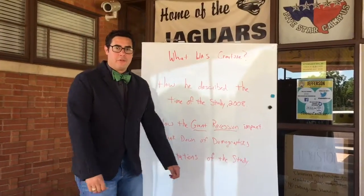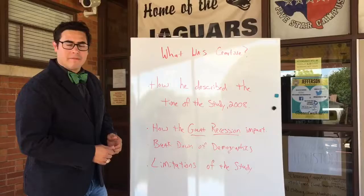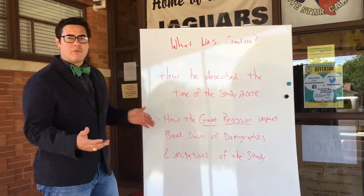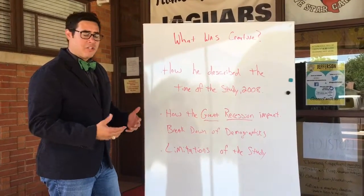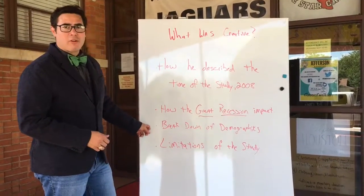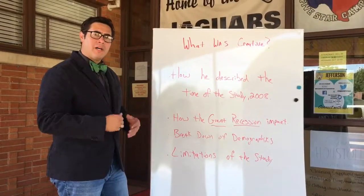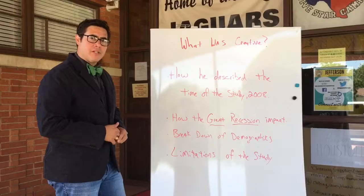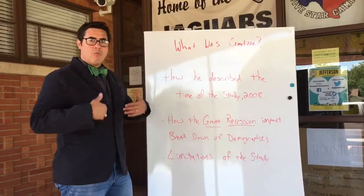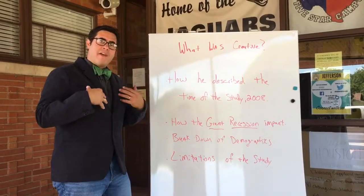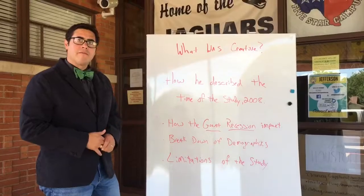Welcome to Jefferson Elementary, which was also built in the 1960s. So how was he being creative? He described the time of the study, which was in 2008 — that was the Great Recession, something that makes it very interesting. The breakdown of demographics helps you to see where the kids are, the type of school, and what type of area he describes in his dissertation. Finally, the limitations of the study — once you see those, you can see if you have similar limitations within your own dissertation.